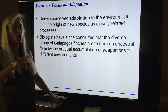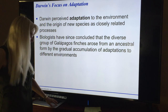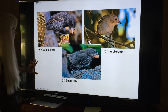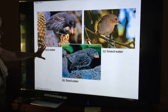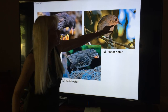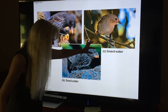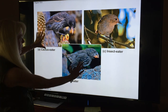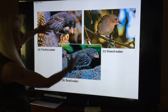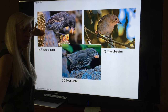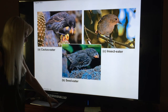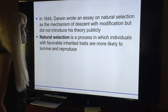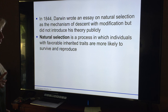Honeycreepers in the Hawaiian Islands are endemic — found no place else. Look at a cactus eater versus an insect eater versus a seed eater — look at how thick that beak is of a seed eater. Just looking at them you can see they almost have some distant relative. Closer, closer, closer.